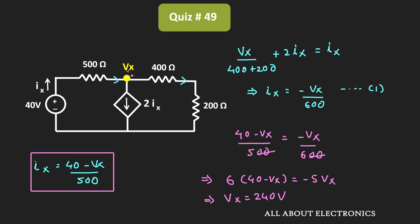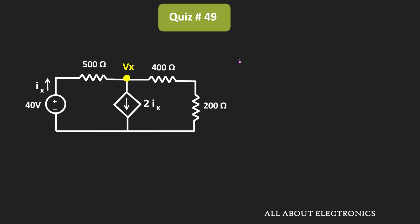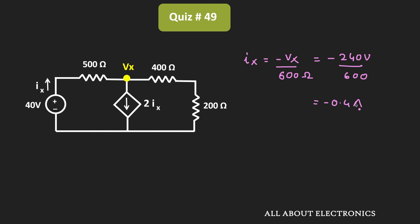That means the voltage at this node, Vx, is equal to 240 volts. Now, by putting the value of Vx into Equation 1, we can find current Ix. That is, Ix equals minus Vx divided by 600 Ohm, which equals minus 240 volts divided by 600 Ohm, which equals minus 0.4 ampere. So Ix is equal to minus 0.4 ampere.